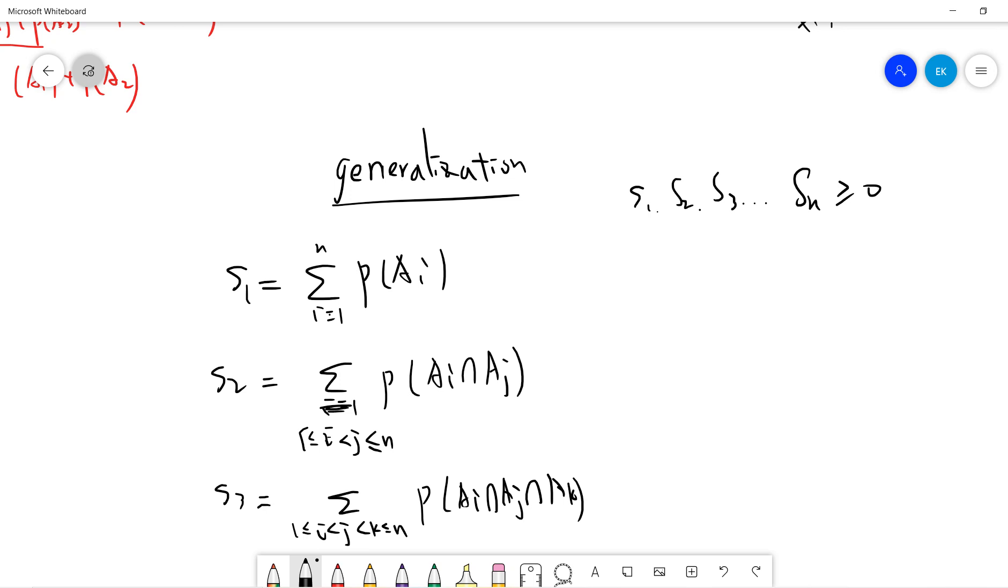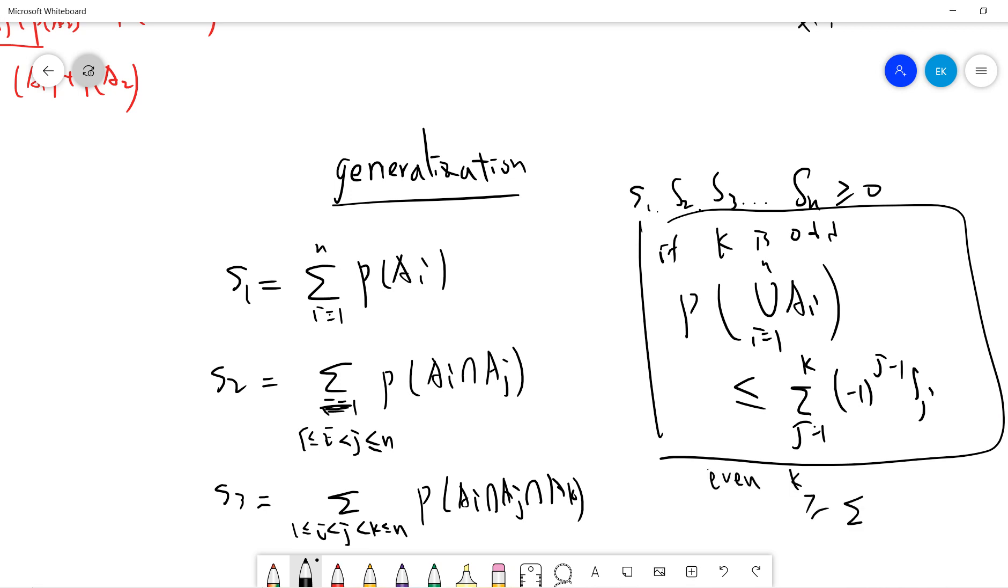Basically you get some numbers up to Sn, all greater or equal to zero. And one can show that P(union Ai from i=1 to n) is less or equal to sum from j=1 to k of (-1)^(j-1)·Sj if k is odd. And for even k, you get the same expression with greater or equal to. I will not prove this, but this is basically the inclusion-exclusion principle. You can write this as many terms and try to find a lower bound and upper bound.